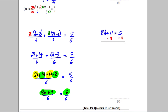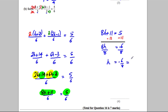Subtracting 11 from both sides gives 8h equals negative 6, so h equals negative 6 over 8. Dividing top and bottom by 2 simplifies this to negative 3 quarters. So h equals negative 3 quarters is my answer.